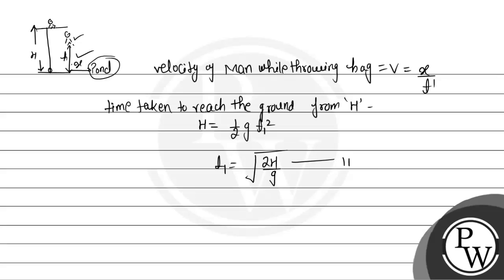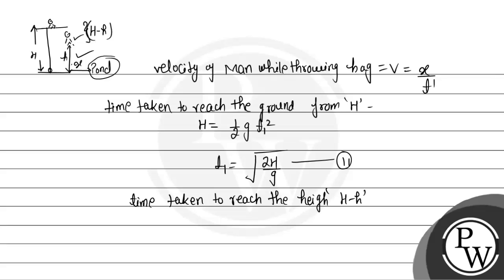Now when the person was at height small h, they had already covered a distance of capital H minus small h from the top of the building. The time taken to cover this distance capital H minus small h — suppose it is t2 — again using the second equation of motion: H minus h equals half g t2 squared. Therefore t2 equals square root of 2 times (capital H minus small h) divided by g. This is equation number three.